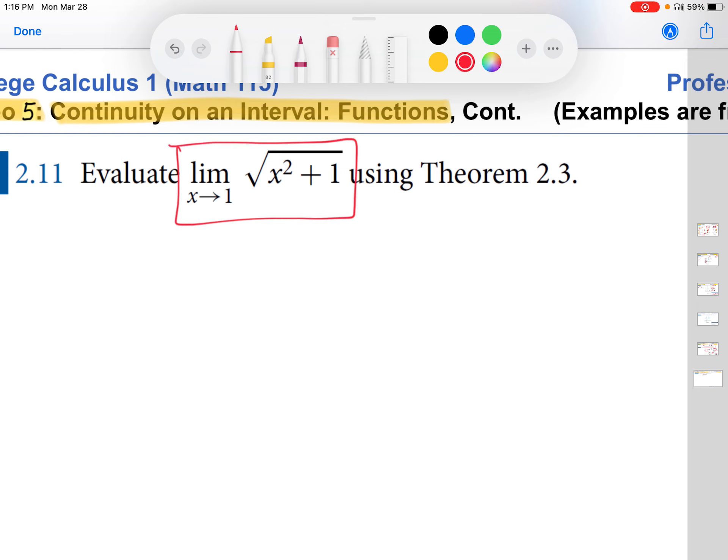It says evaluate this limit, and then using theorem 2.3. We'll sort of ignore that for the minute. That'll be the second way. So I'm going to focus on evaluating this limit. What am I going to do? Well, first of all, I am going to say, as x approaches 1, what am I thinking about? Well, I'm thinking about values of x that are really, really close to 1, both from the left and from the right of 1. So this is going to be kind of like if I looked at 1.0001 squared plus 1, or if I looked at 0.9999 squared plus 1. So these are numbers that are very close to 1 from the left and from the right.